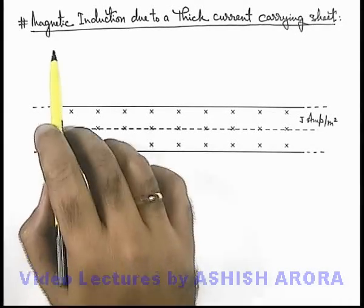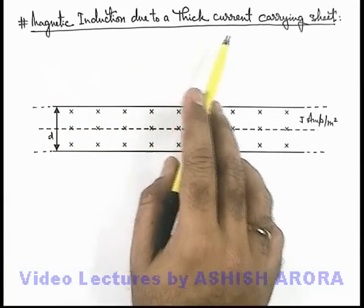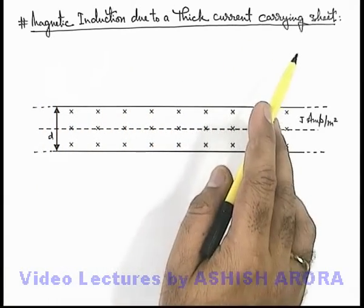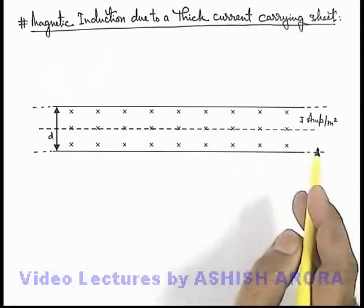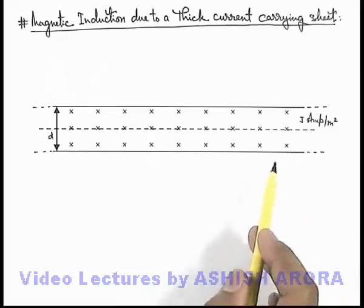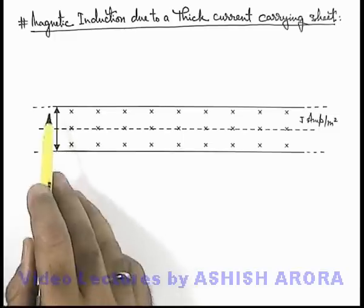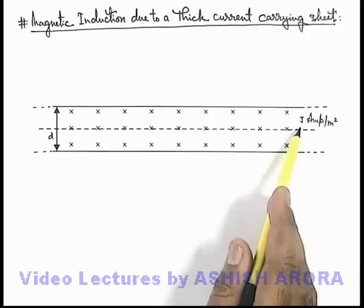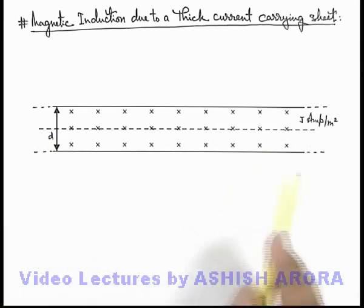Now let us study the magnetic induction due to a thick current-carrying sheet. This is the cross-section of the current-carrying sheet which has a thickness d, and it carries a current density j ampere per meter square throughout its cross-section.